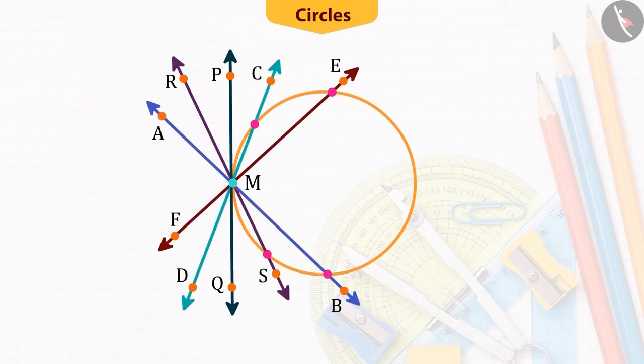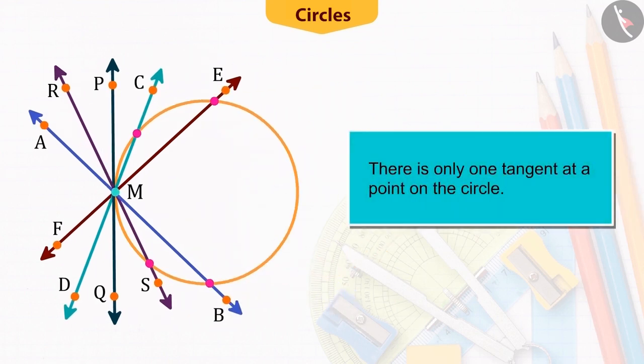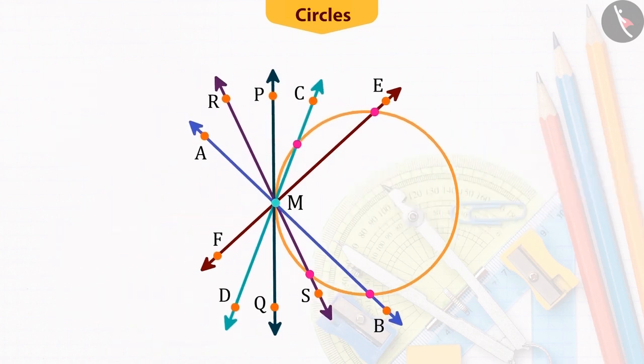So, from this activity, we can conclude that there can be only one tangent passing through a point of a circle.